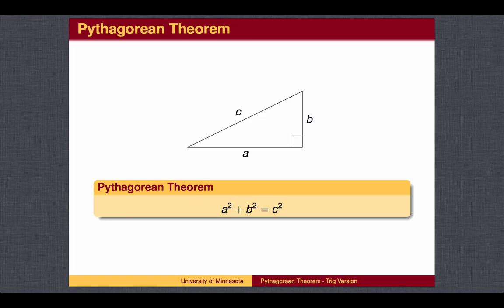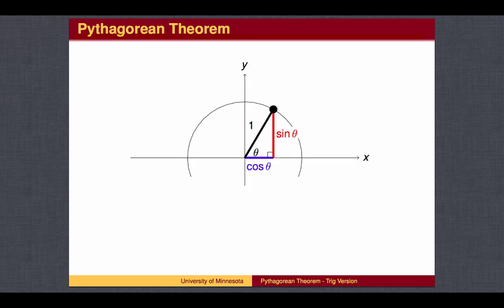We already know the Pythagorean Theorem for right triangles. We now wish to apply it to the right triangles that we see in the unit circle.